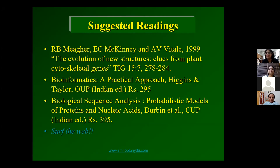These are some of the books and references. The first reference is the Meagher paper, then the Higgins and Taylor book — which you can buy for 295 rupees. Of course, you should surf the web. With this introduction and first part on how bioinformatics can be used to study gene products involved in the plant cytoskeleton, I hope you have a feel for what is possible with this area. I will now ask my students to take over.